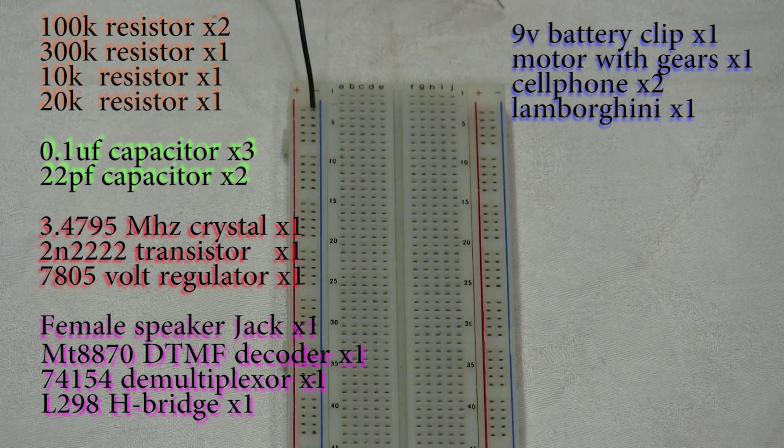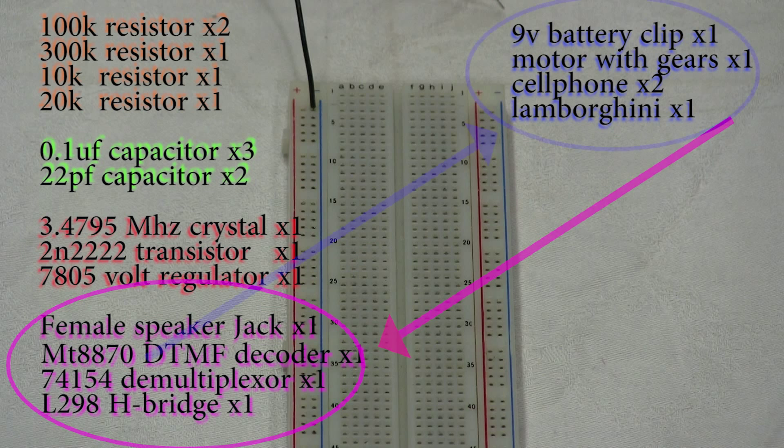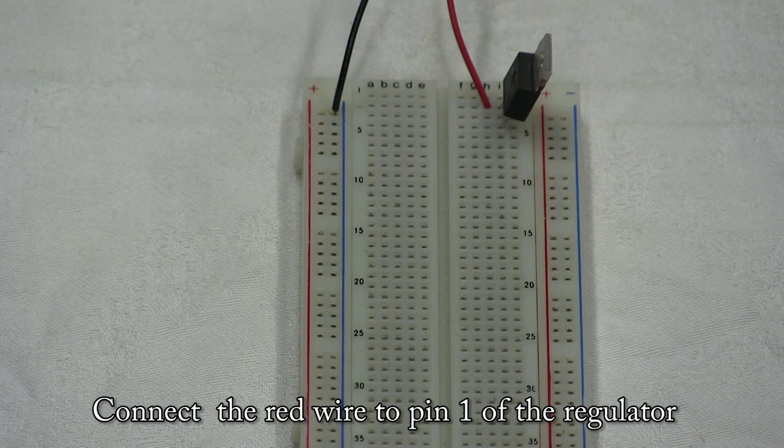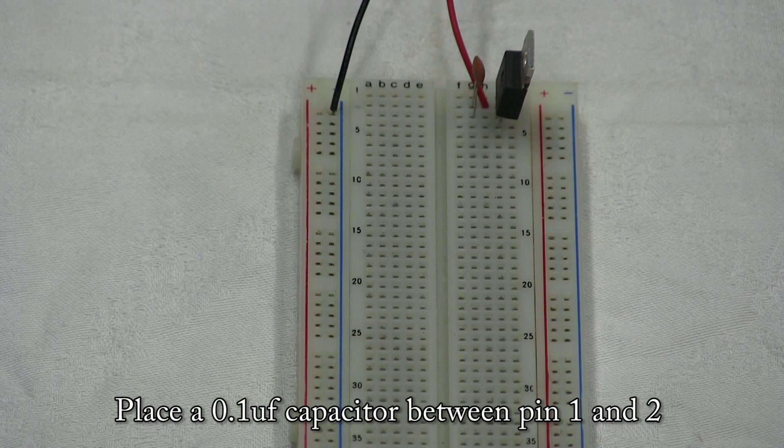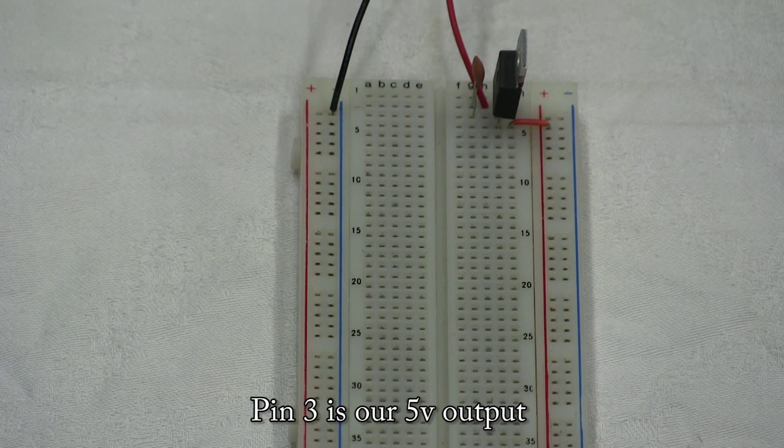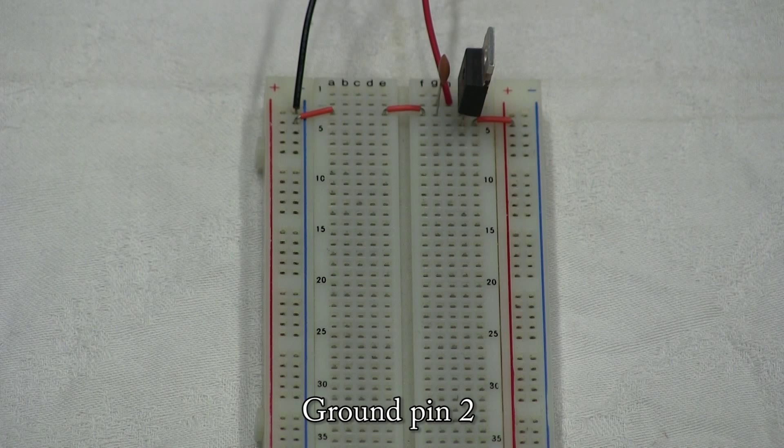So let's start, make sure you have all of these. Connect the red wire to pin 1 of the regulator. Place a 0.1uF capacitor between pin 1 and 2. Pin 3 is our 5V output. Ground pin 2.